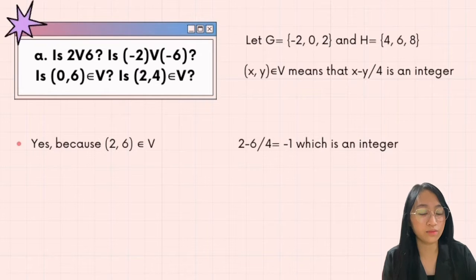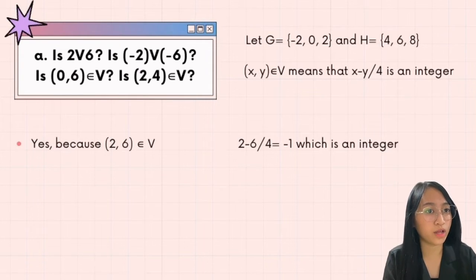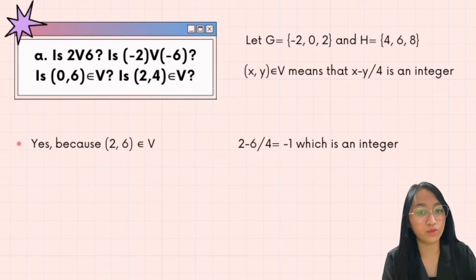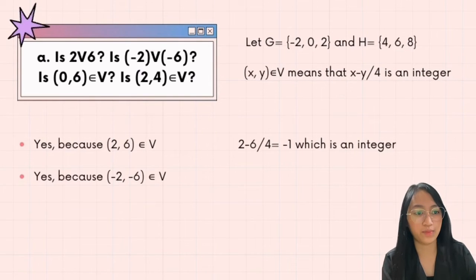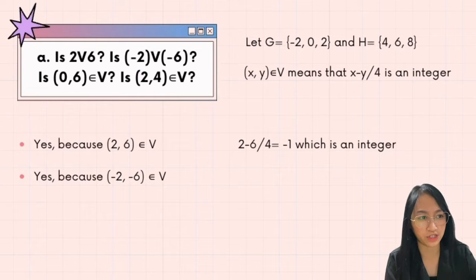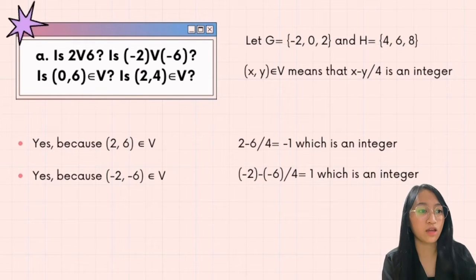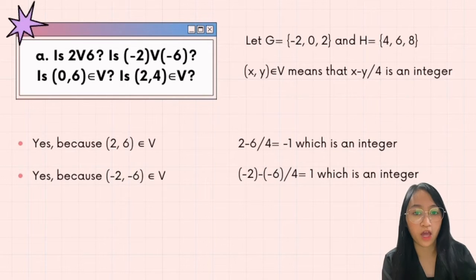For the second question: is negative 2 related to negative 6? The answer is yes, because (-2, -6) is an element of relation V. Our x is negative 2 and our y is negative 6, so negative 2 minus negative 6 over 4 equals 1, which is also an integer.